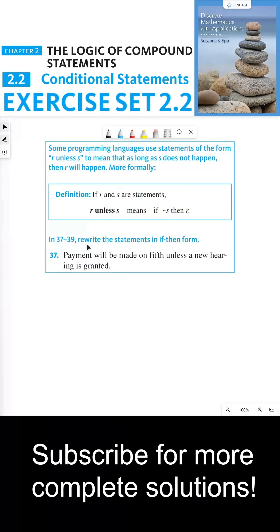In 37 through 39, rewrite the statements in if-then form. Payment will be made on fifth unless a new hearing is granted.